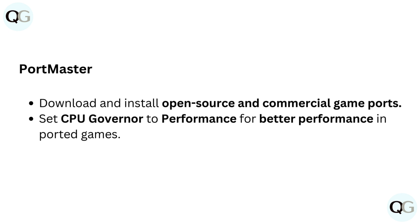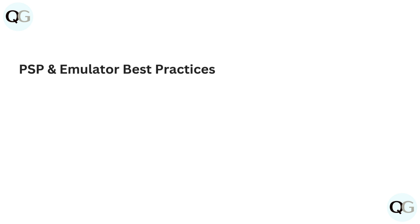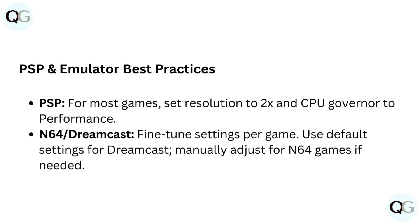Best practices summary: for PSP, set resolution to 2x and CPU governor to performance for most games. For N64 and Dreamcast, fine-tune settings per game — use default settings for Dreamcast and manually adjust for N64 games if needed.